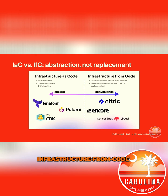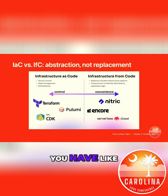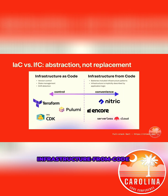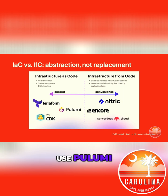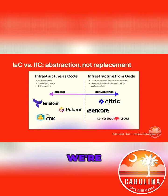I like to call infrastructure from code an abstraction, not a replacement for infrastructure as code. On the left you have infrastructure as code tools like Terraform, Pulumi, and CDK. Infrastructure from code is just an abstraction on top of those things — you can still use Pulumi or Terraform, but you don't have to. The one we're specifically going to look at is Nitric.